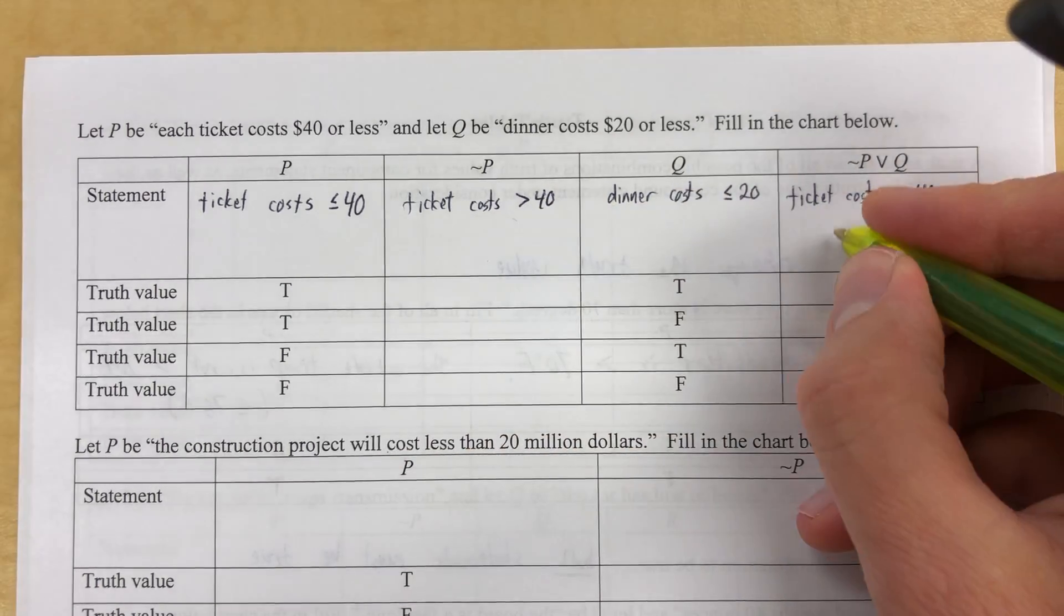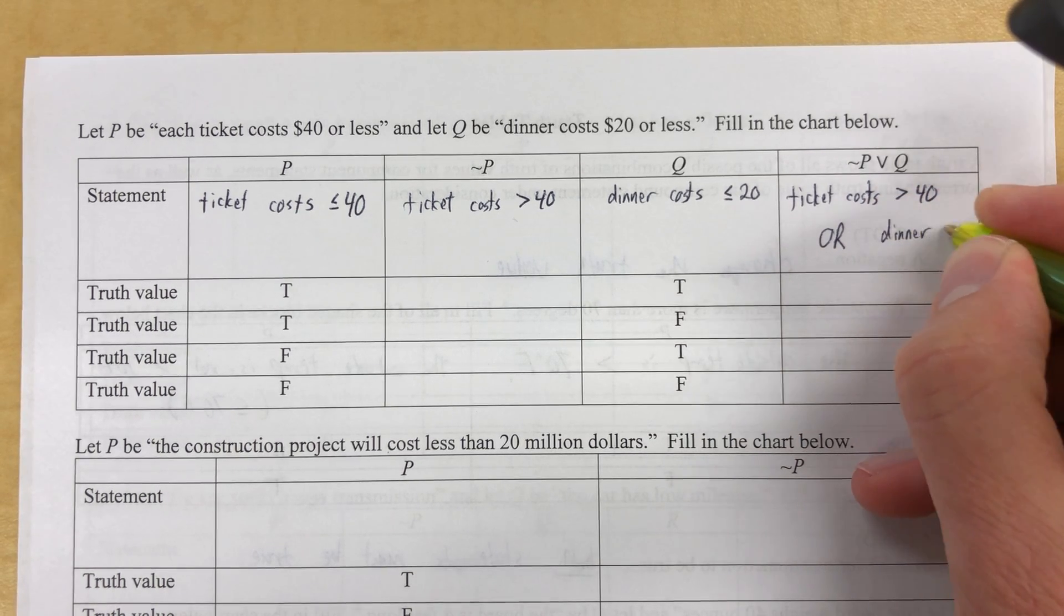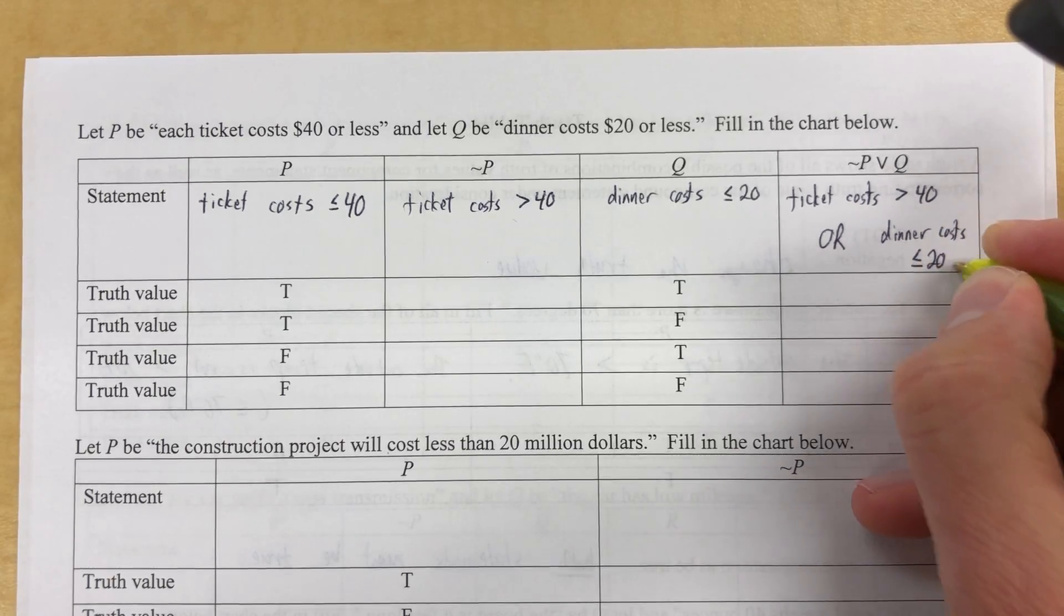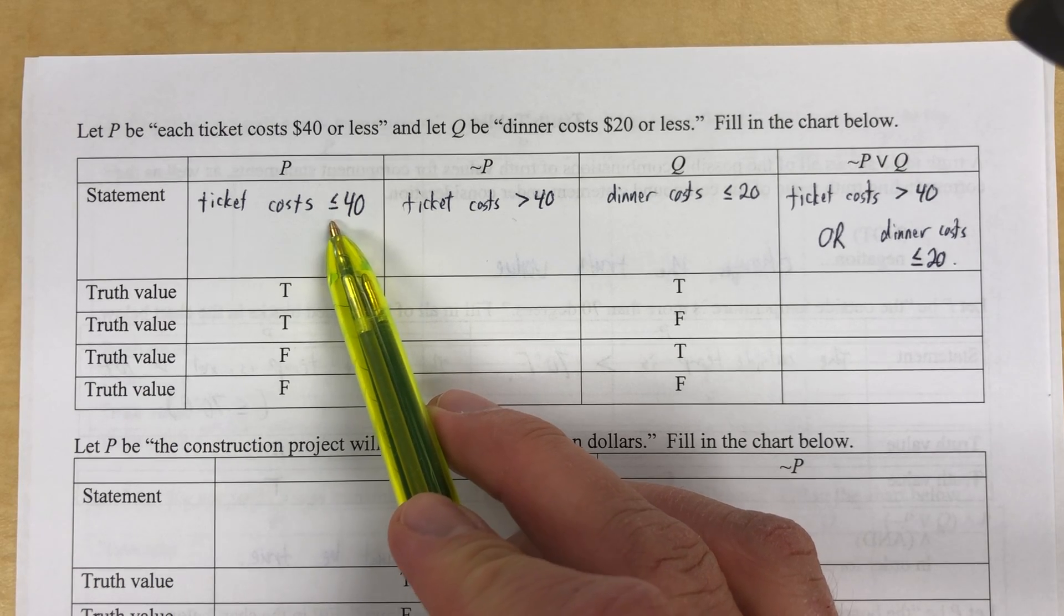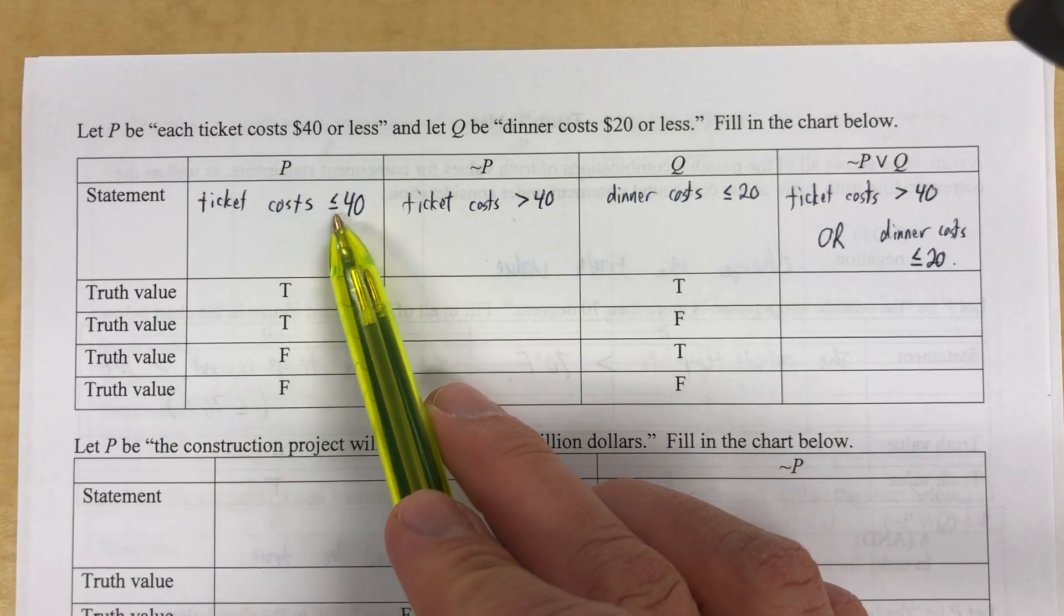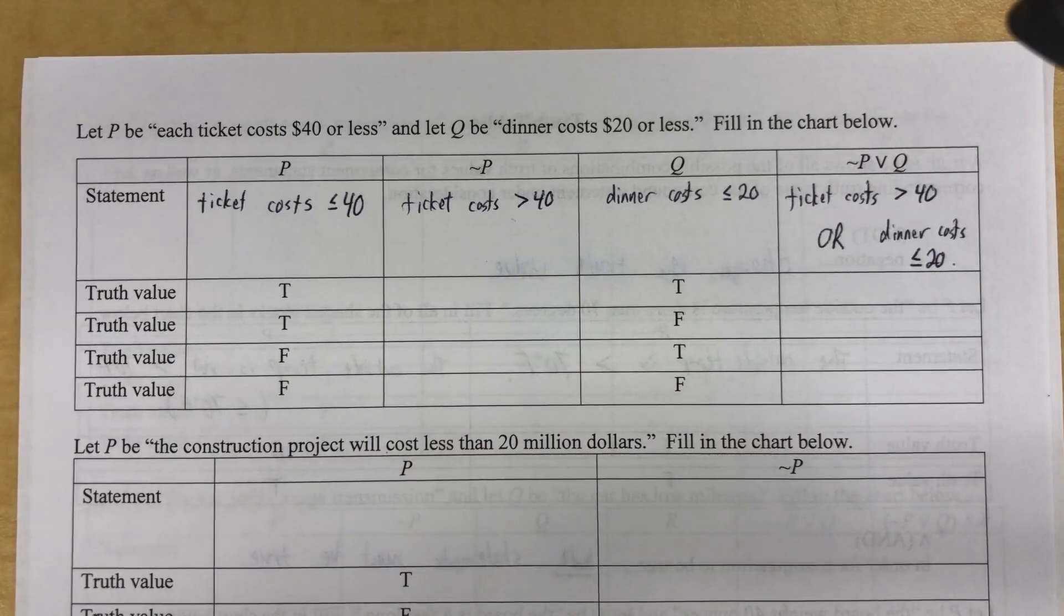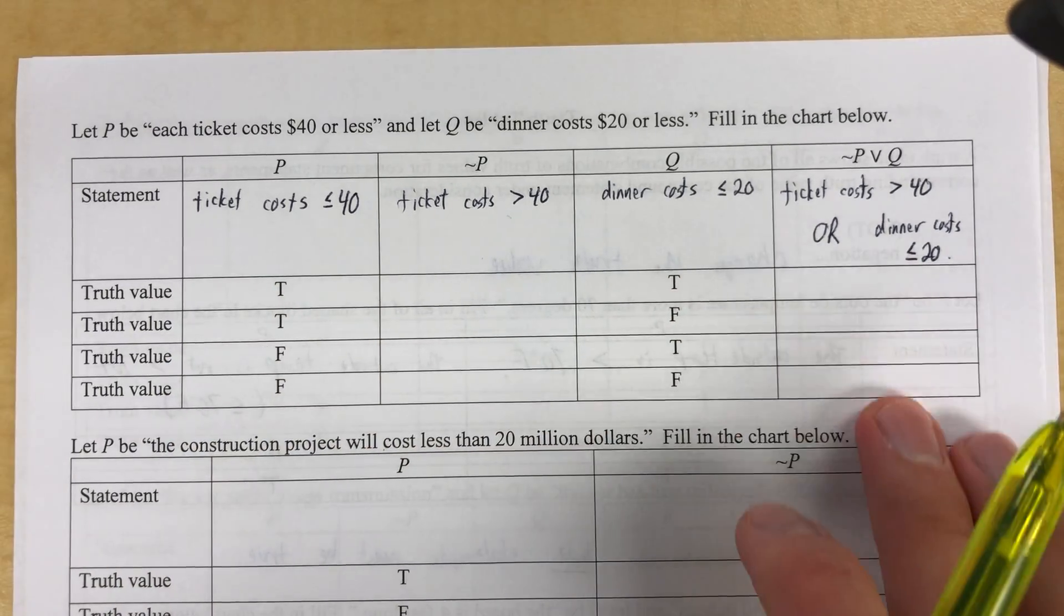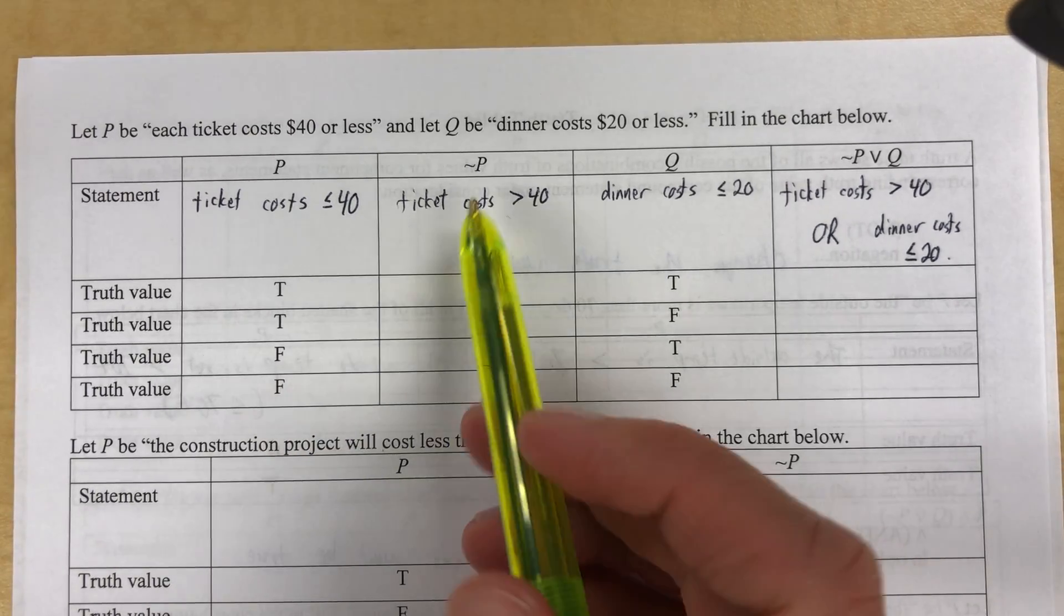Ticket costs greater than 40. Notice I'm looking at this column or dinner costs less than or equal to 20. And I do want to point out here that when I had less than or equal to 40 and I turned it into not that, it had to be greater than, but it couldn't be equal because I already had the equal here and I don't want it to be the same as this. Okay. I need to fill in some columns here and we're going to kind of work our way in this direction. So let's not go here yet.